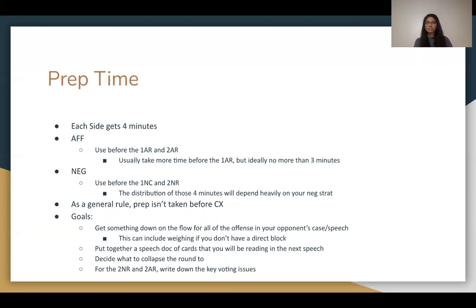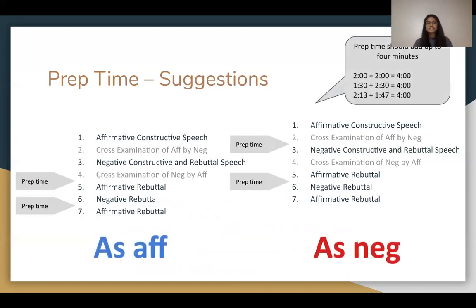Use your prep time to get something on the flow for all the offense in your opponent's case or speech — this can include weighing if you don't have a direct block or carded evidence. Put together a speech stack of cards you'll be reading so you don't have to click through multiple tabs. Decide what to collapse around, and for the 2NR and 2AR, write down your key voting issues.